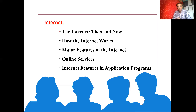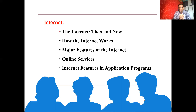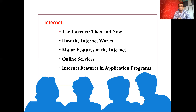Before moving on to other topics, let us take up some basic information about the internet. Most of us know what internet is, what is broadband, fibernet, 2G, 3G, 4G and 5G, but we don't have enough information about them. I would like to throw some light on this aspect, especially to help us acquire e-resources that will facilitate our academic development. The things I will be covering include: the internet then and now, how the internet works, major features of the internet, online services, and internet features in application programs.